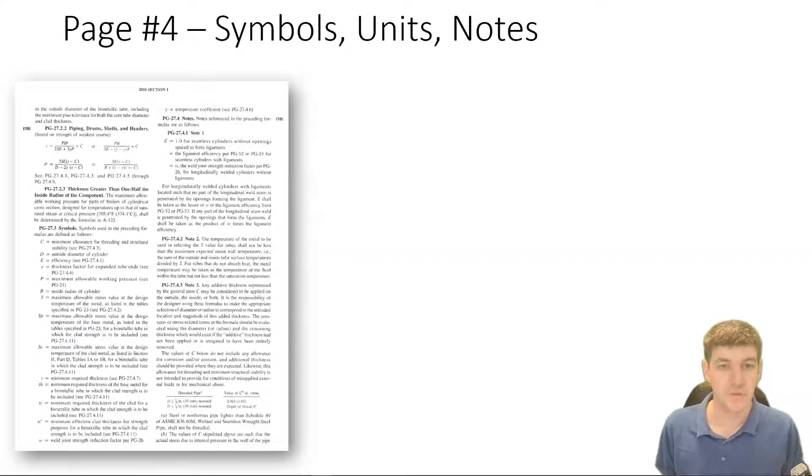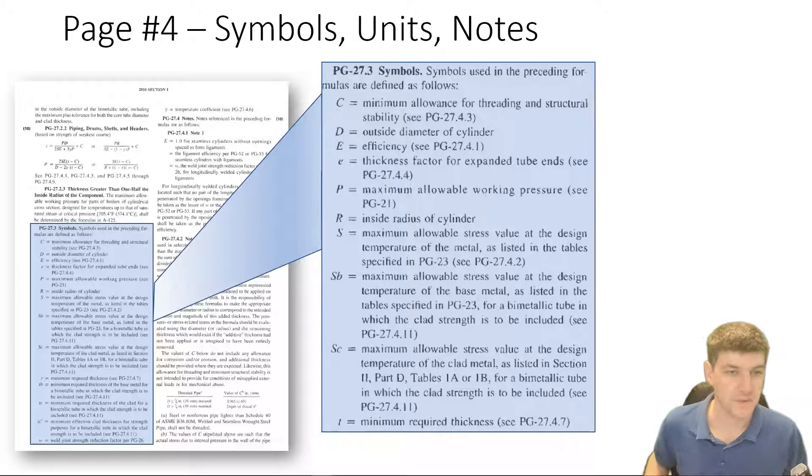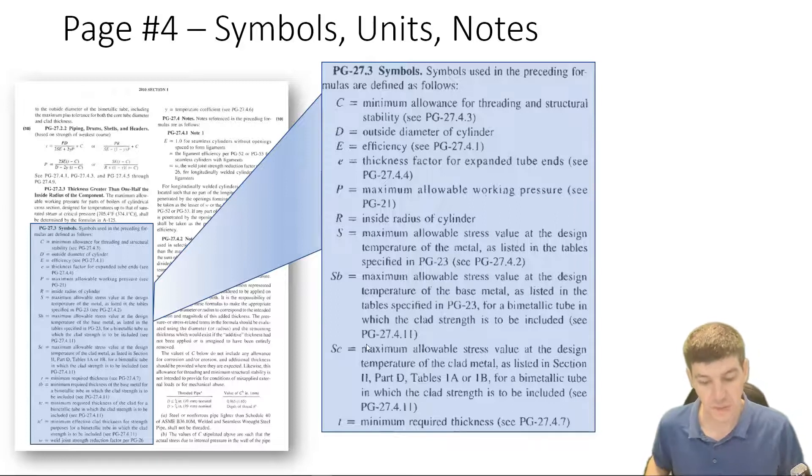In that equation, we had a number of different variables, a number of different symbols that were used. And so if you go to the next page, you have a list of all the symbols that are used in this paragraph. And so PG 27.3 lists out your symbols. And so we have a whole list of different symbols. Some of them are applicable to your equation. Some of them are not. They're used in different places. But it's a list of all of the different things that are used. So that's a pretty handy value for you to be able to reference what is what.